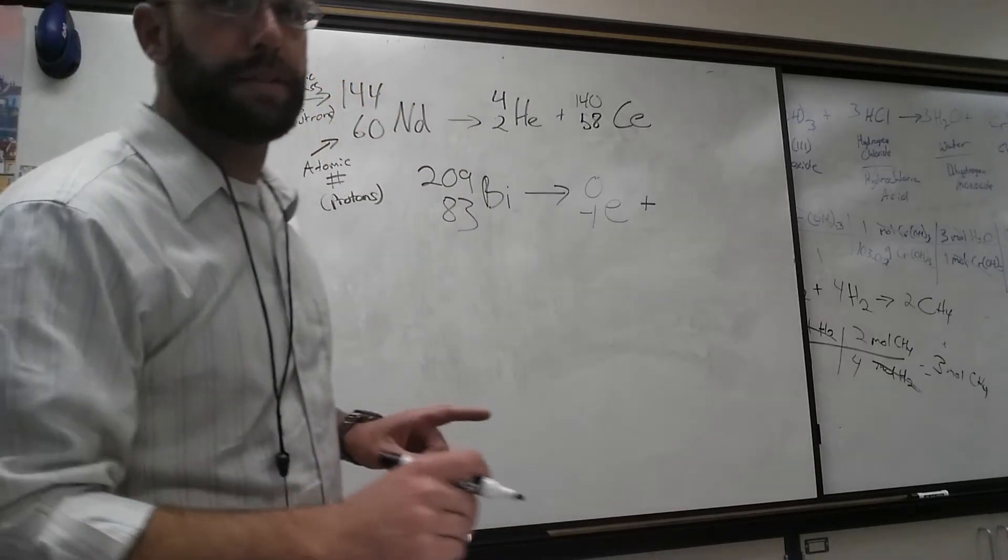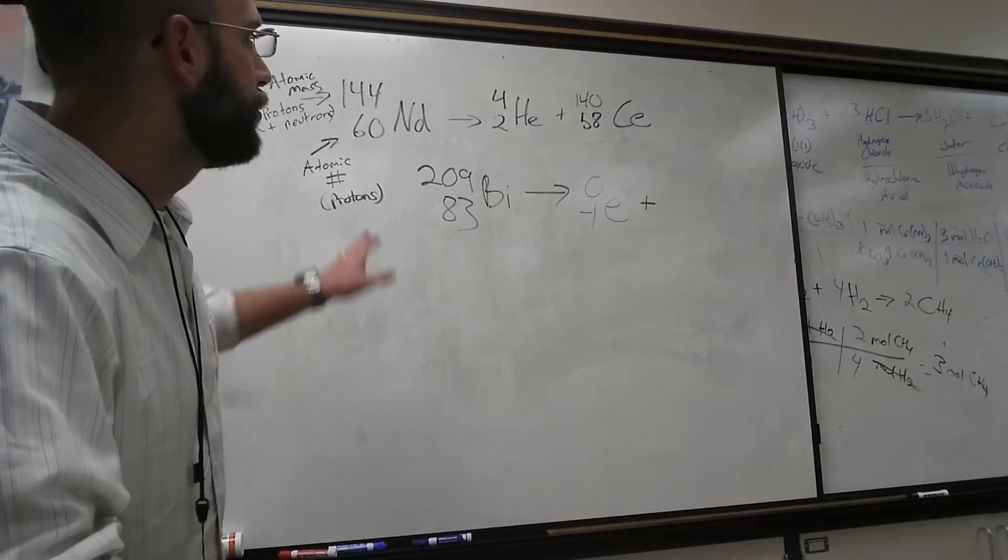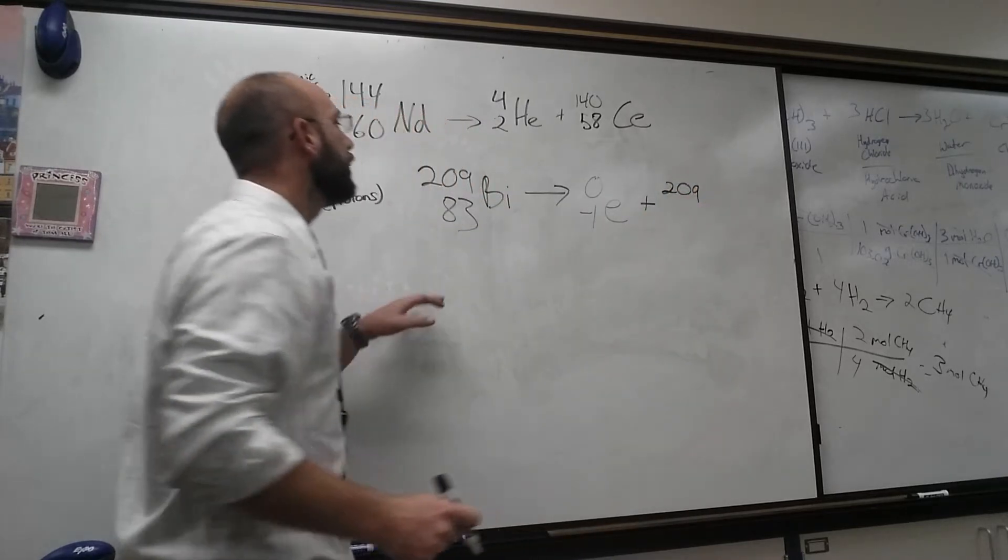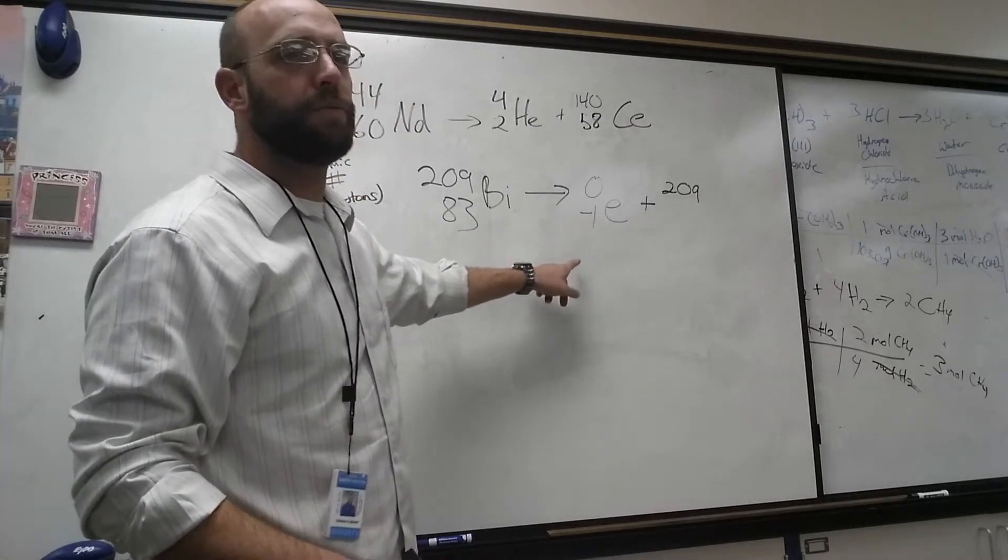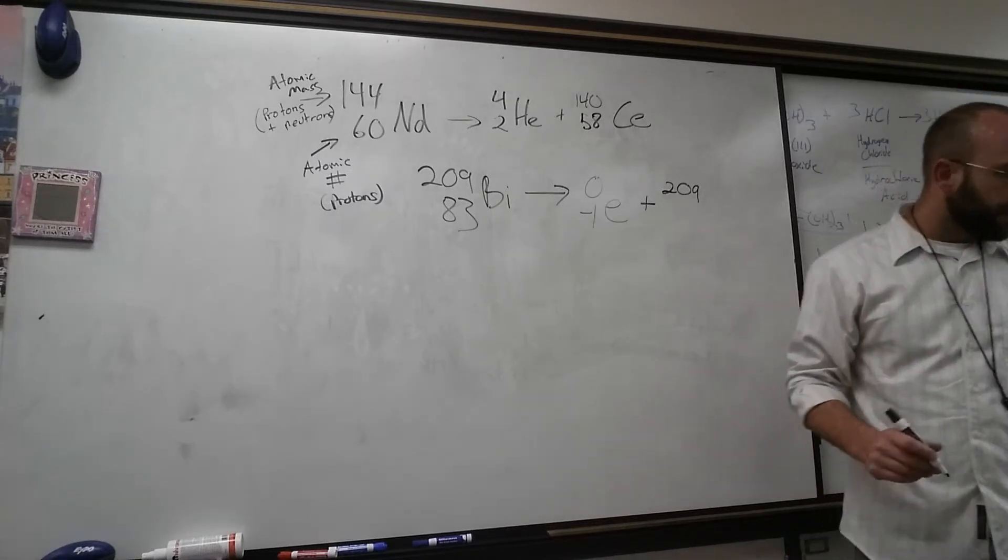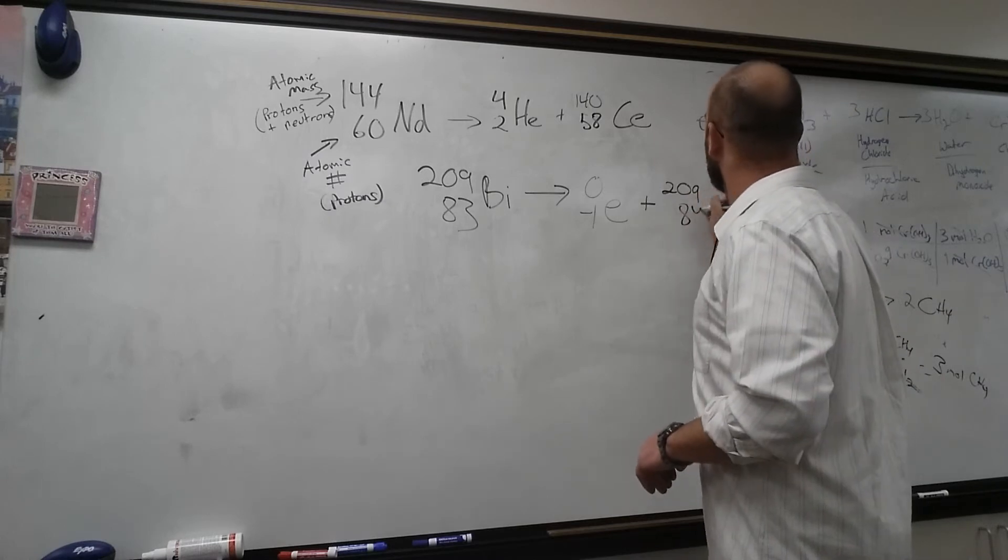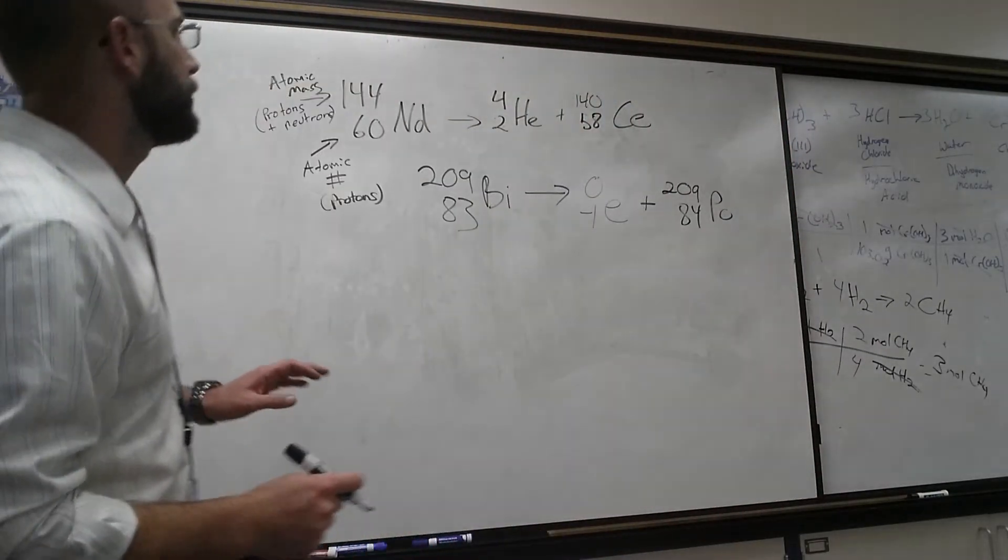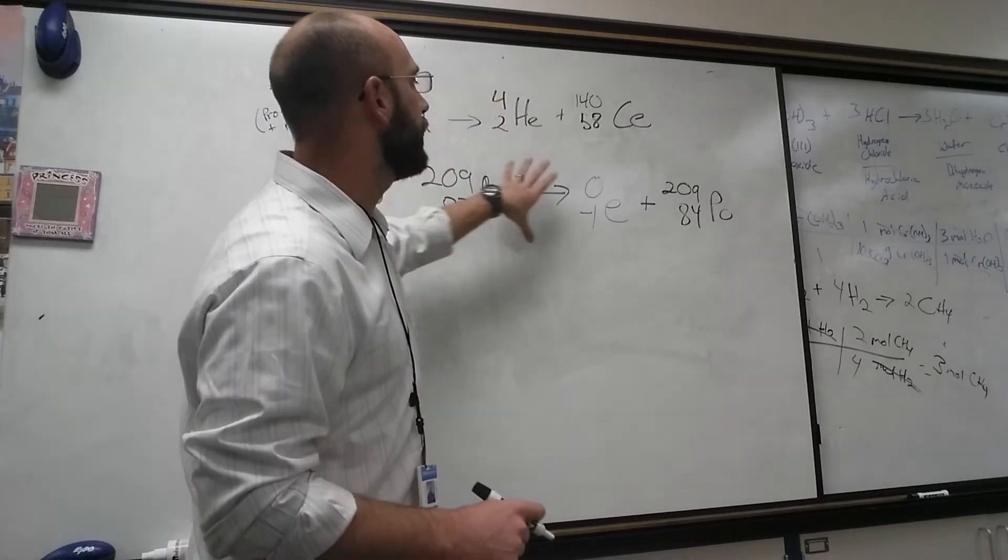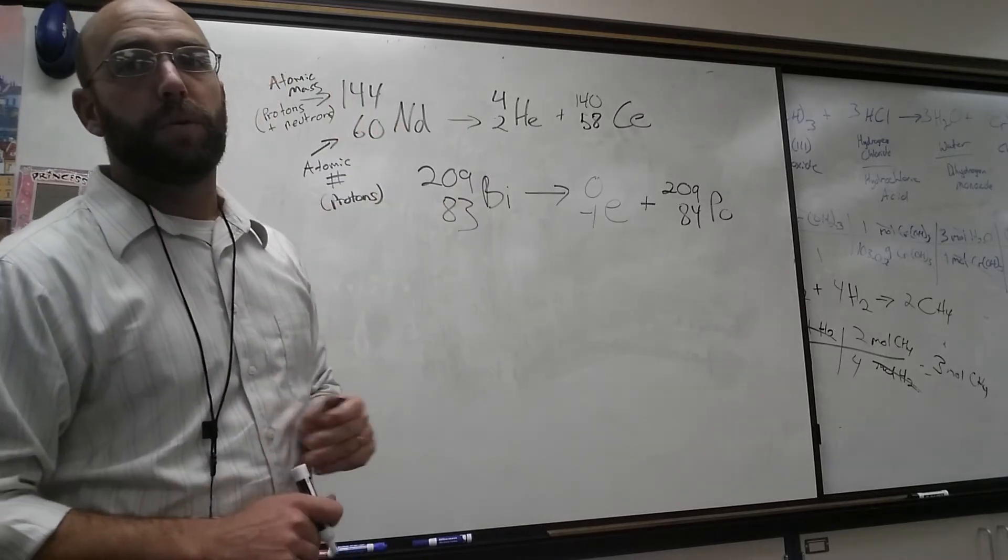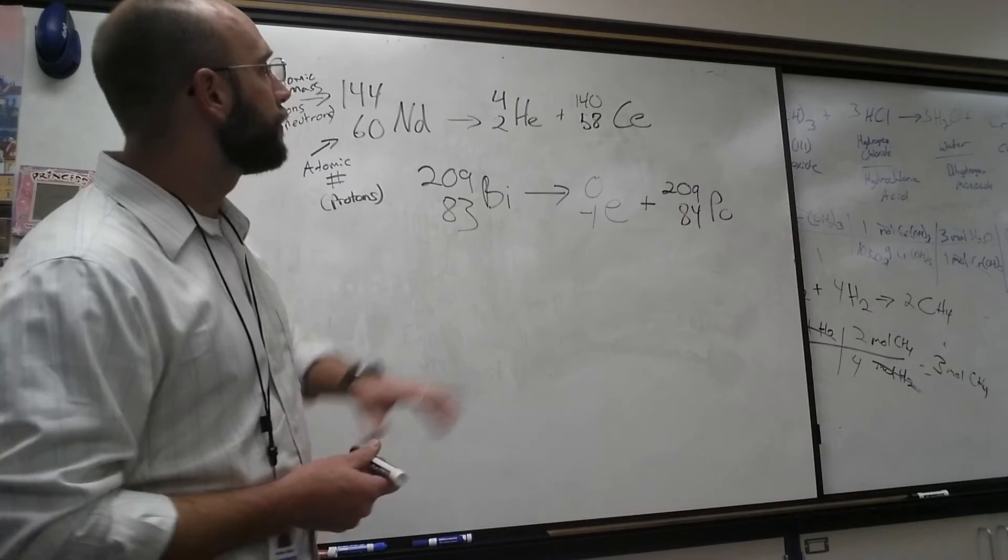What I want you to understand here is we are going to be subtracting a negative. 209 minus 0 is 209. I have 83 minus negative 1, which is actually going to give me element number 84 as my product of this reaction, which is polonium. We're going to look it up on your table. This is alpha decay, this is beta decay. We're just subtracting, treating the arrow like an equal sign.